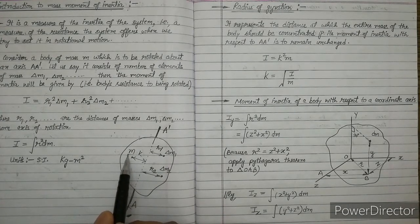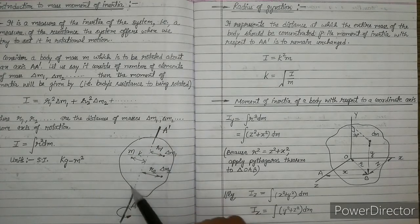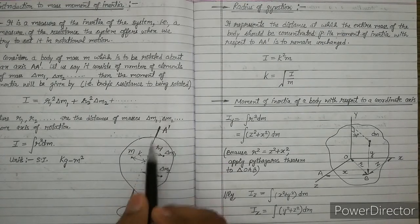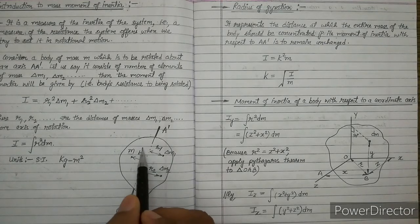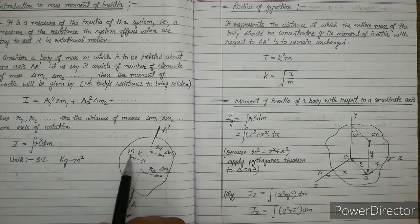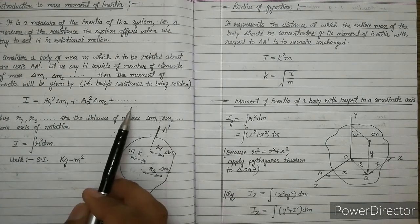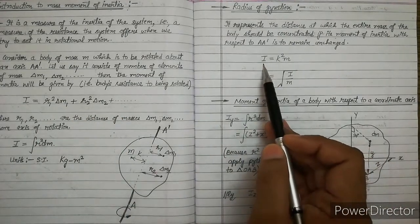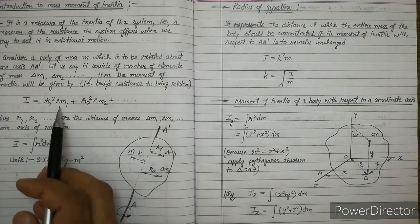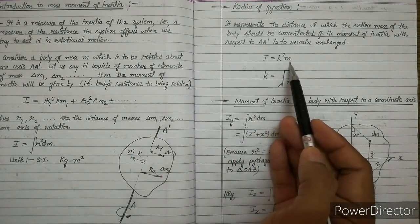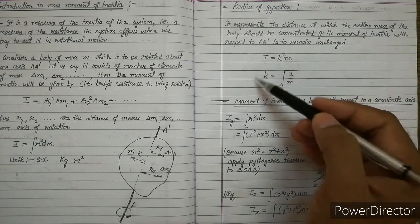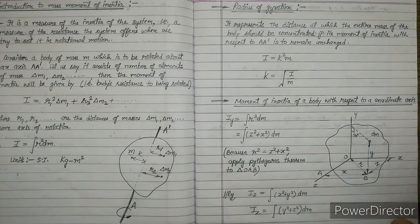Now, if we replace all these masses with a single mass m — assuming the entire mass of the body is located at a single point at distance k from the axis of rotation — and the moment of inertia calculated using this mass m remains the same as before, then k is the radius of gyration. Therefore: I = k² × m, where k replaces r and m is the entire mass. From this, k = √(I/m). This formula you should remember for radius of gyration.